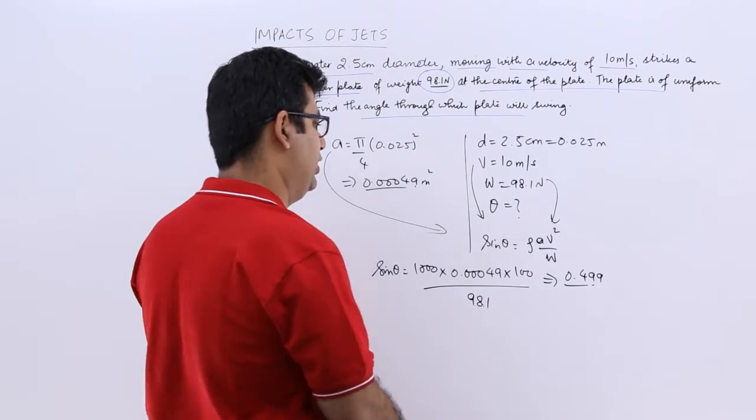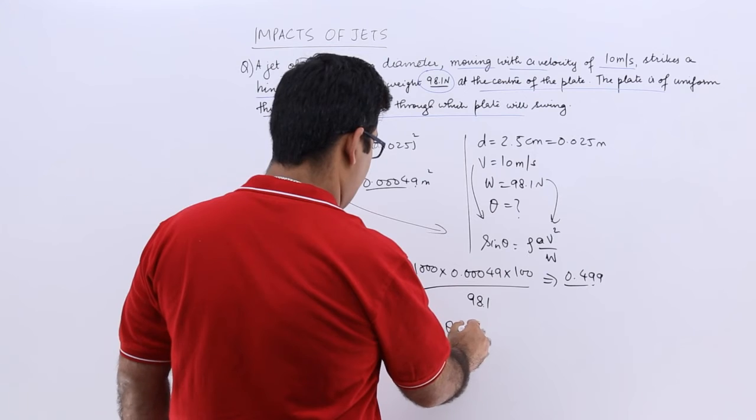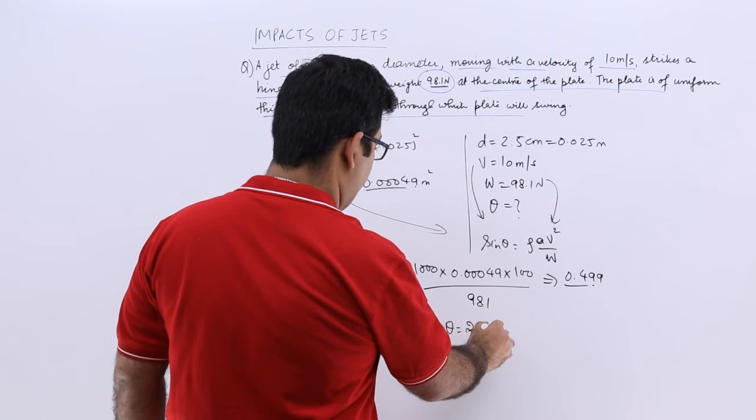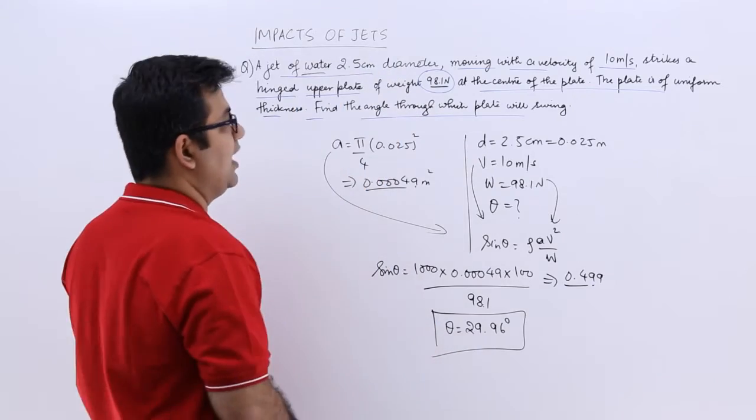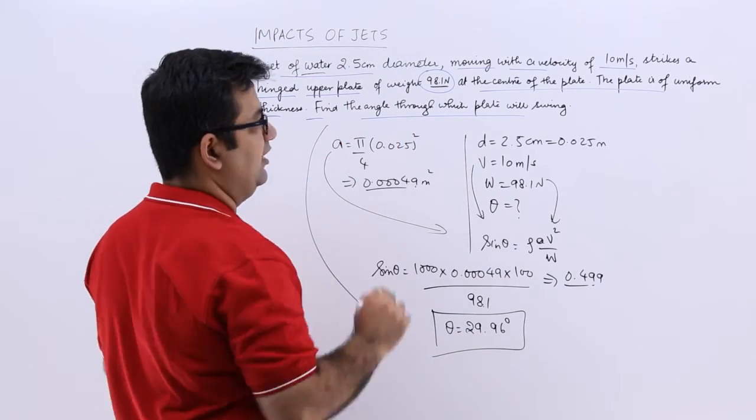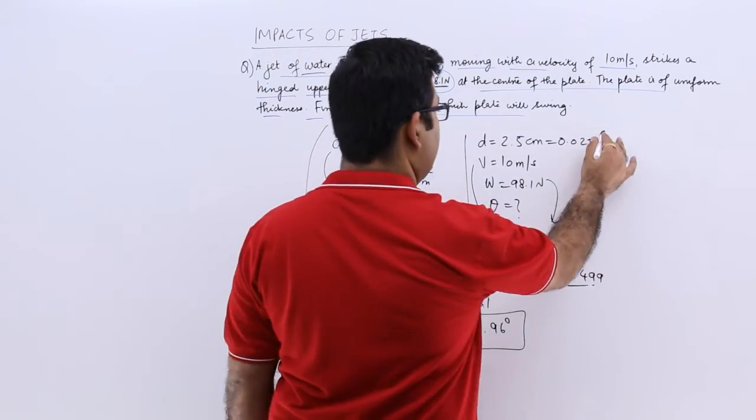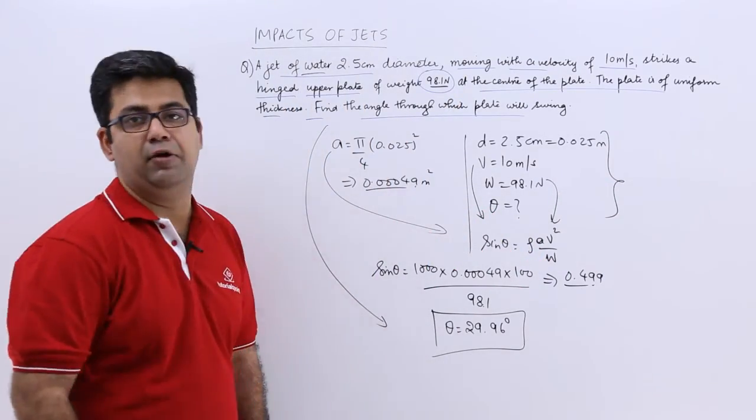So this angle would be close to 30 degrees. Theta would be 29.96 degrees to be exact. So this is the angle through which the plate will swing if the given conditions are applied on it.